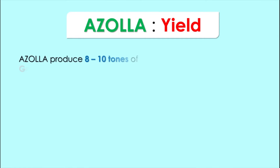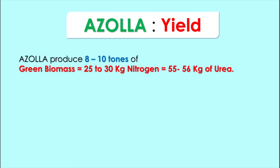Azolla produces up to 10 tons of green biomass per hectare, which is equivalent to 25 to 30 kg of nitrogen, further equivalent to 55 to 56 kg of urea.